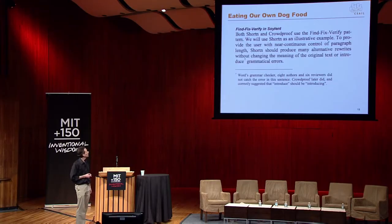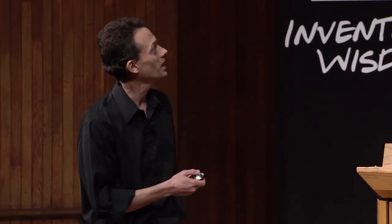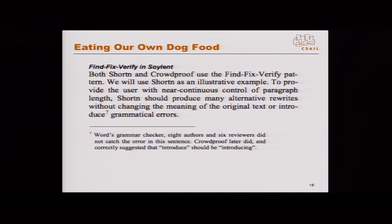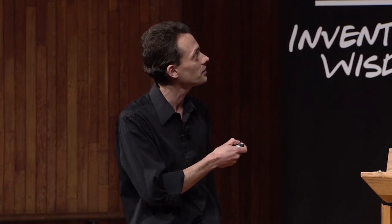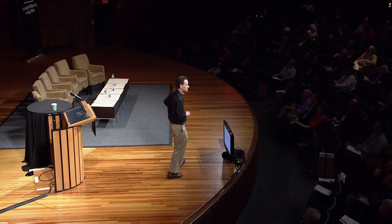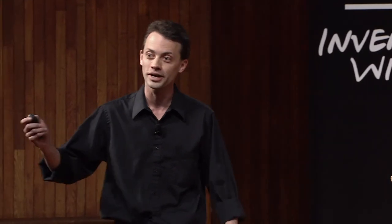We wrote a paper about Soylent and fed the paper itself into the system. We discovered a grammatical error that Word didn't catch, that none of the authors caught despite there being many authors, and that none of the reviewers caught. The error was the word 'introduce' which should be parallel with 'changing' and so should be 'introducing.' None of those people caught it because they were all tired by page eight, whereas the crowd reading it saw it as the first thing they encountered with fresh eyeballs, looking specifically for grammatical errors. There is really a lot of value in drawing on human beings who are different from yourself.